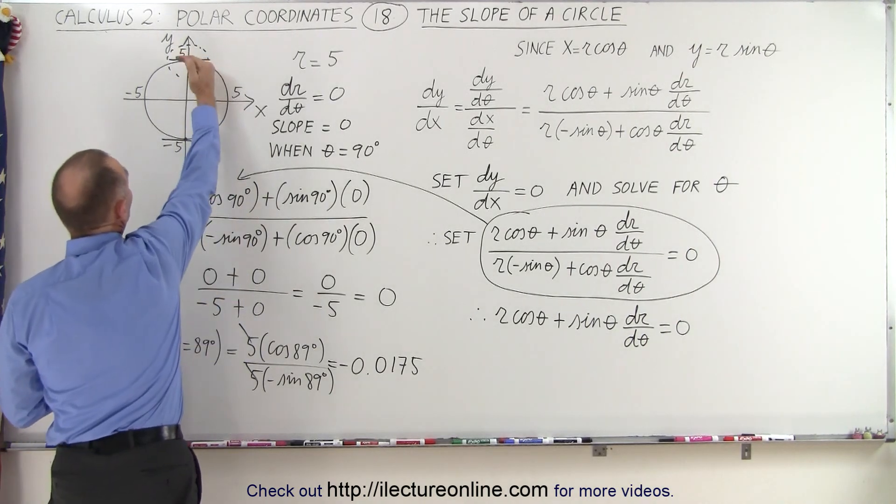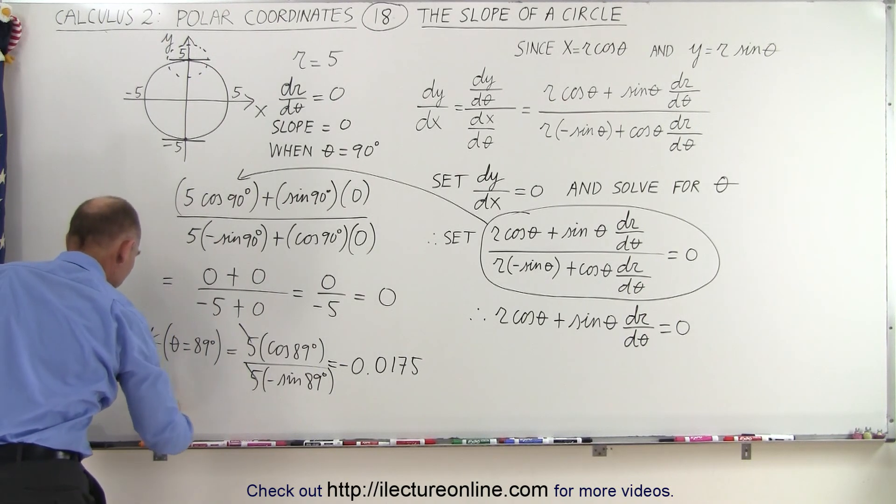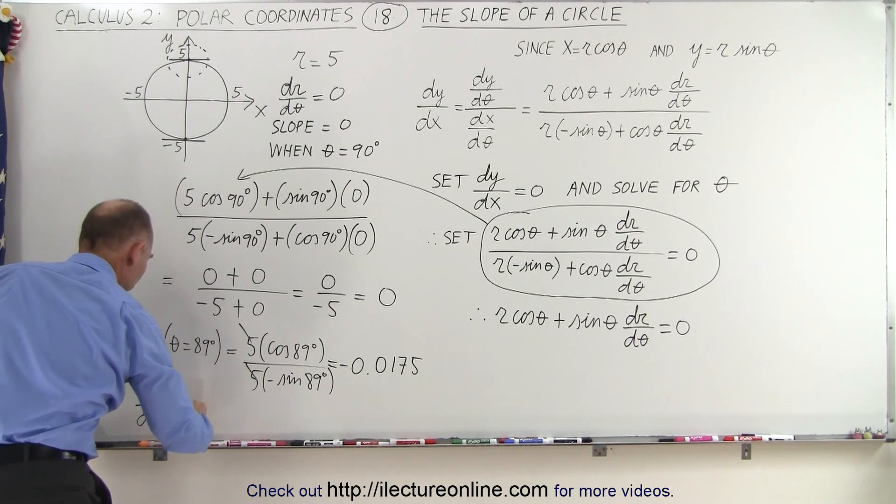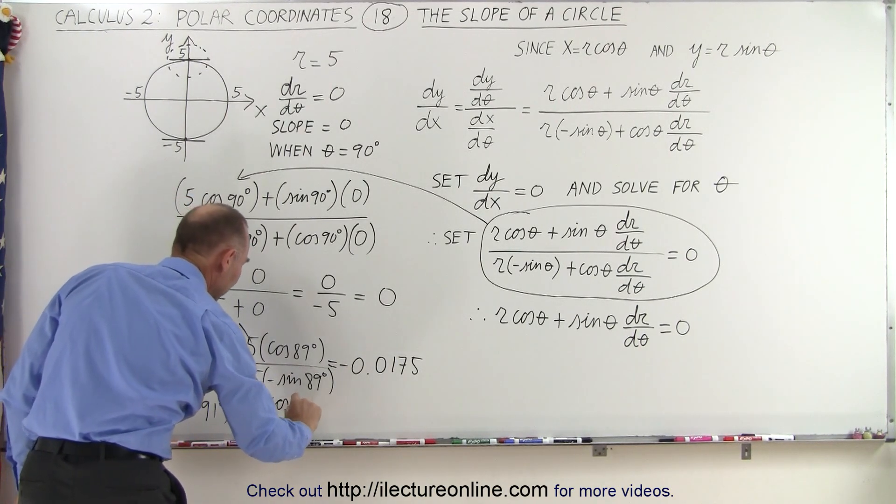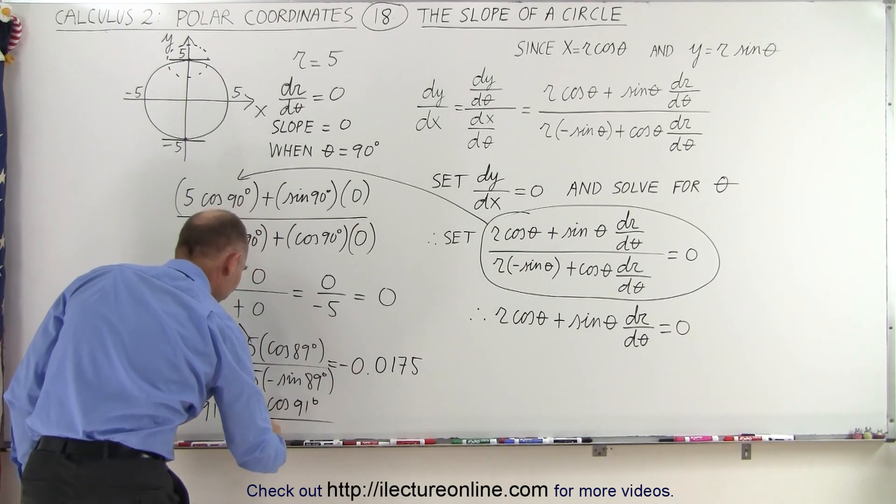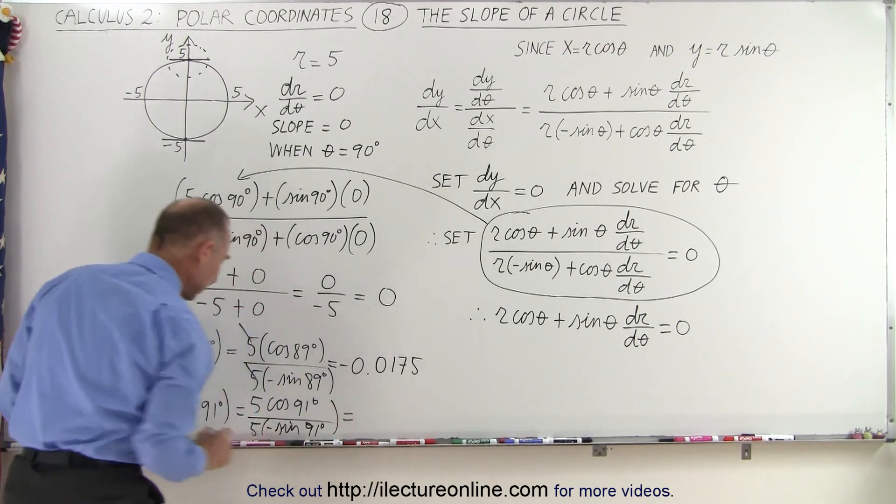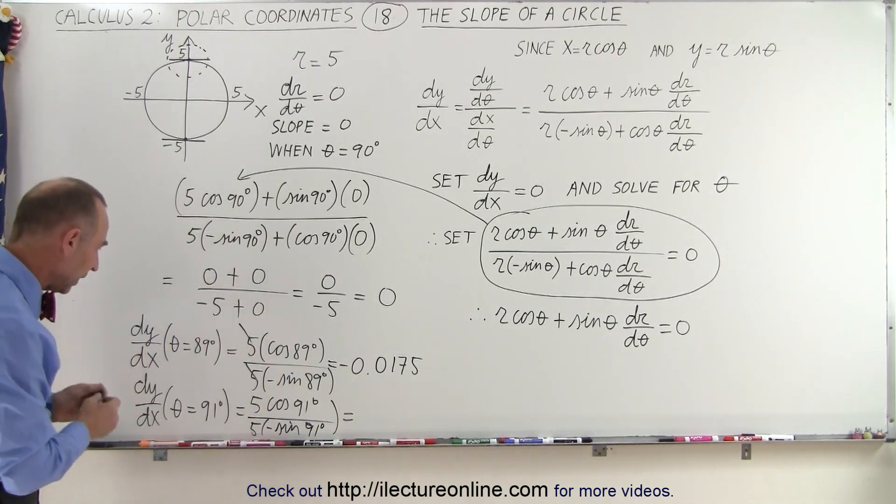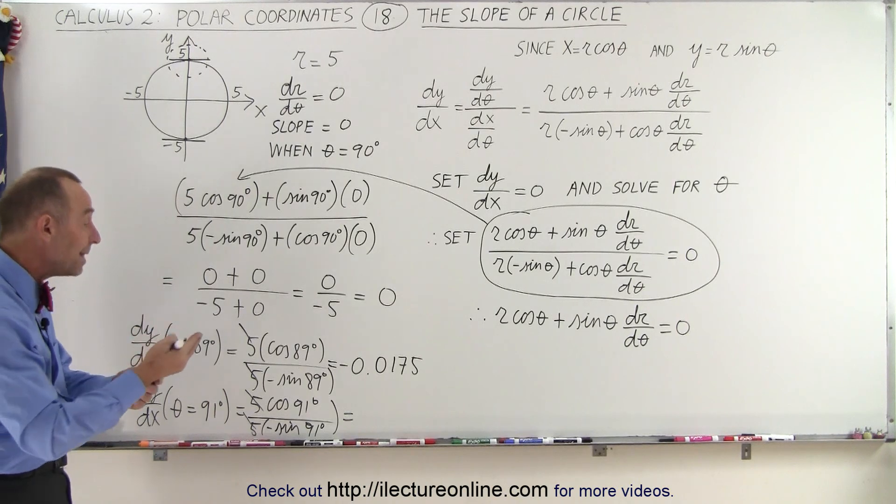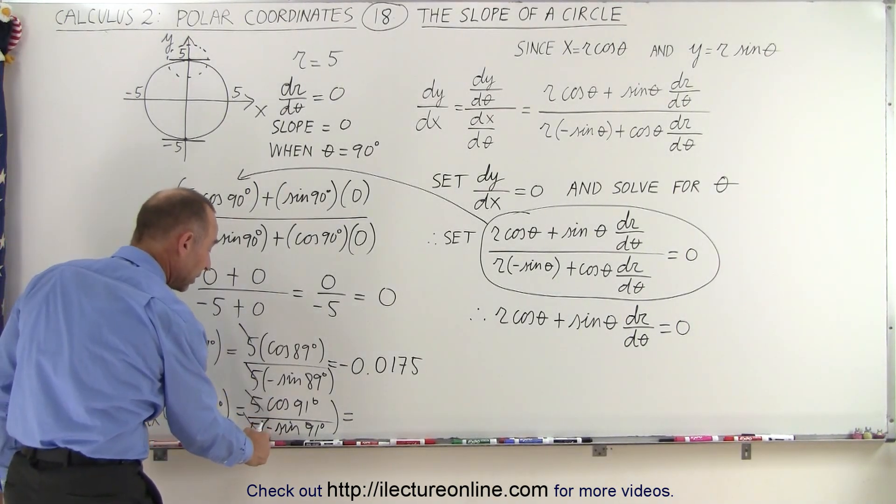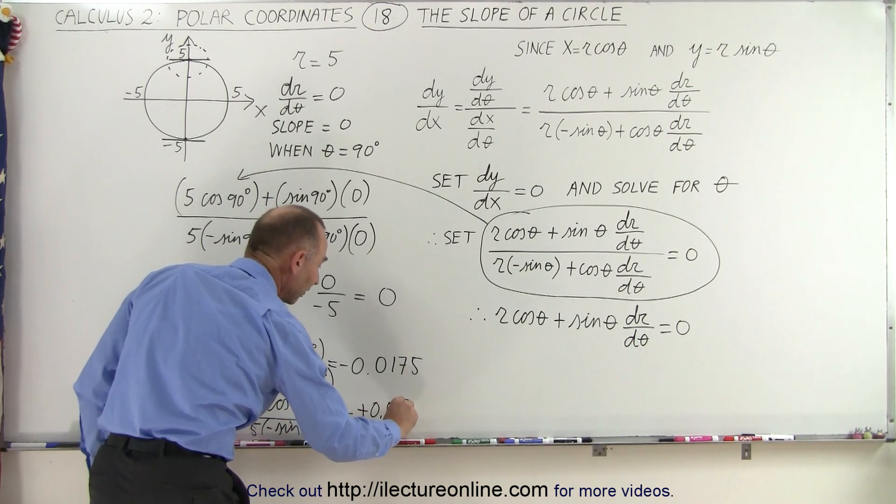Indeed, notice to the right of straight up the highest point here, the slope will indeed be negative. Now if we find dy/dx when theta equals 91 degrees, it gives us 5 times the cosine of 91 degrees divided by 5 times the negative sine of 91 degrees. Again, the 5s cancel out. But now the cosine of 91, since it's past 90, that will give you a negative value. And we have a negative at the bottom here. Then you'll find out that this will now be a positive 0.0175.